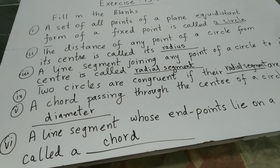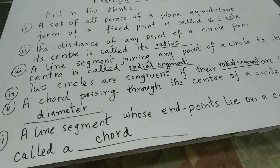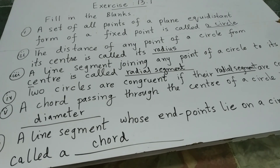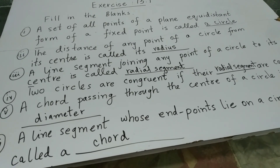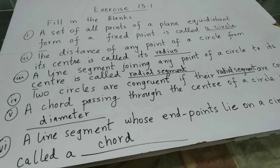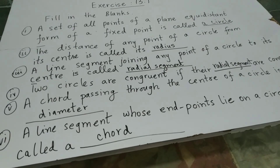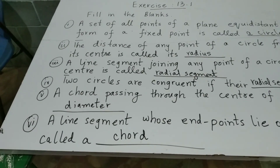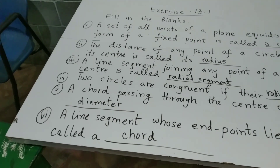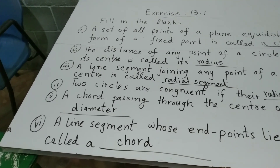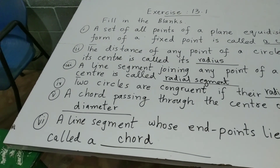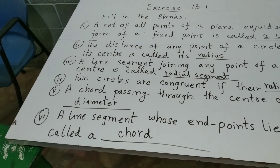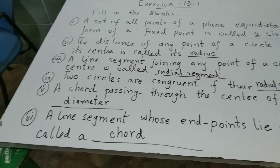Next: a line segment joining any point of a circle to its center is called a radial segment. The fixed point is called the center of the circle, and the segment joining this point to any point on the circle is called the radial segment.